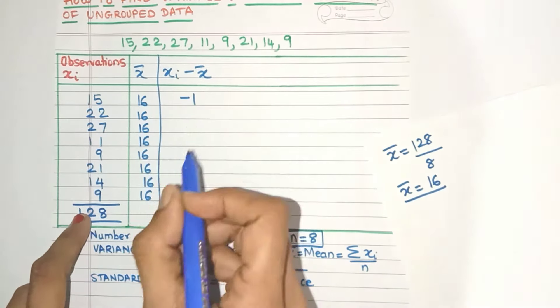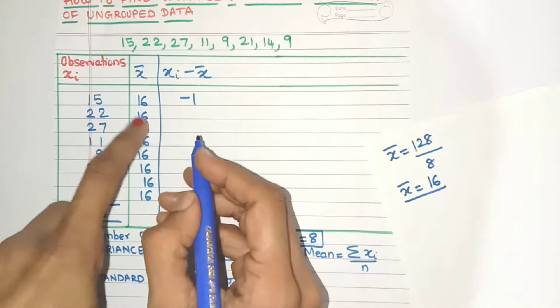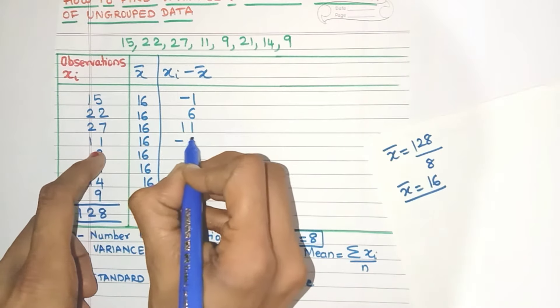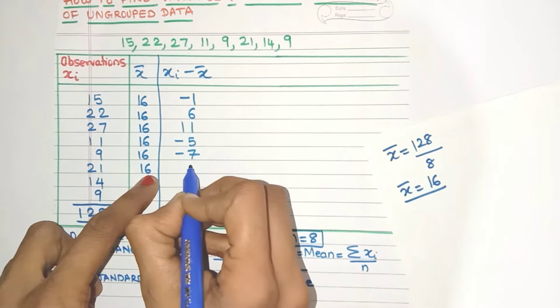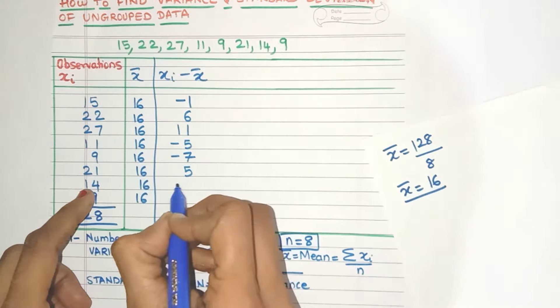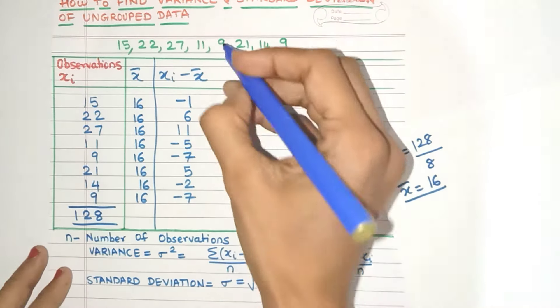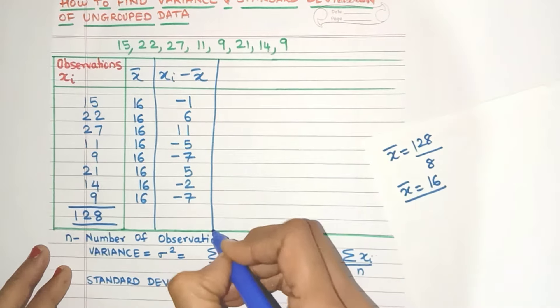15 minus 16 minus 1. Remember to put the minus. 22 minus 16 is 6. Yes, this will get 11 minus 5 minus 7. This will give me 5. Yes, this is minus 2 and here you will have minus 7. Just do it very carefully. Now here is our xi minus x̄.